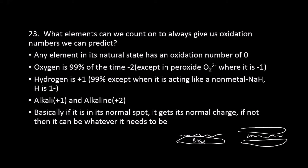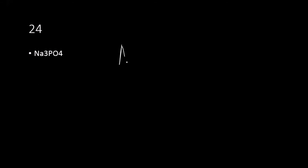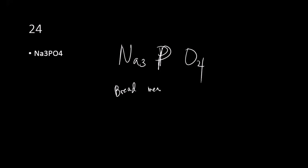Let me show you how to find oxidation numbers. For Na₃PO₄, P is in italics - that's your unknown, X. The compound has no charge shown, so it equals zero - that's a sandwich problem. Set up the equation: sodium (Na) has a charge of +1, so 3 × (+1) = +3. Oxygen has a charge of -2, so 4 × (-2) = -8. So: 3 + X + (-8) = 0, giving X - 5 = 0, so X = +5. The oxidation number for phosphorus is +5.